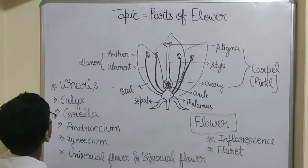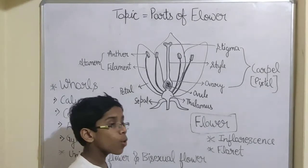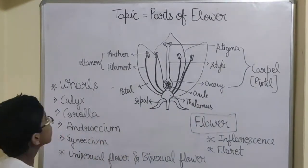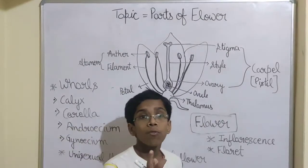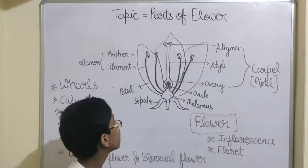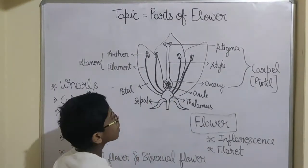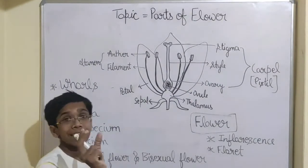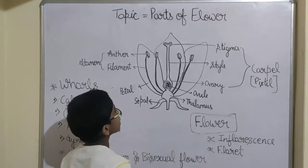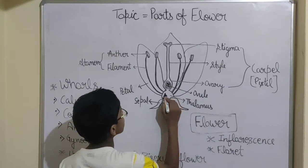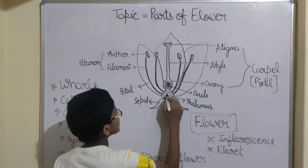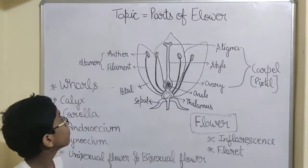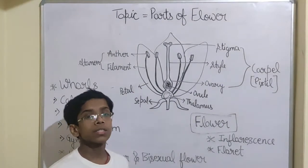Guys, a flower has four whorls. What are whorls? Whorls are circles which are above the thalamus — a swollen thing which is known as thalamus. And above it, there are four circles which are known as four whorls.